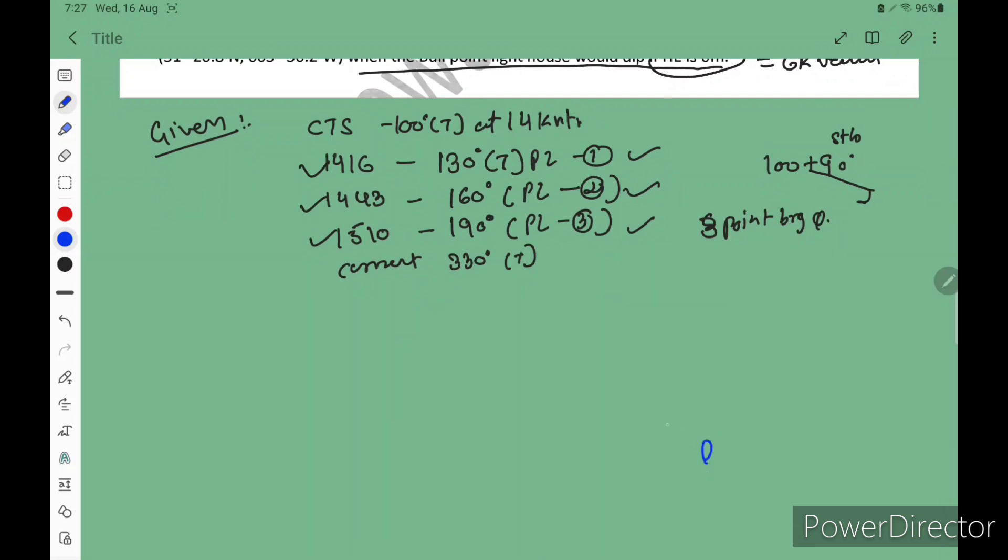How we will do this: Consider this is your Bull Point and 130 first PL. This is your 160 and this is your 190. Now you have to mark PL1, PL2, PL3: 130, 160, 190.